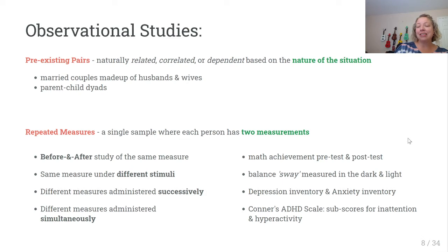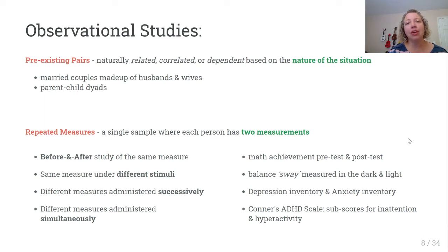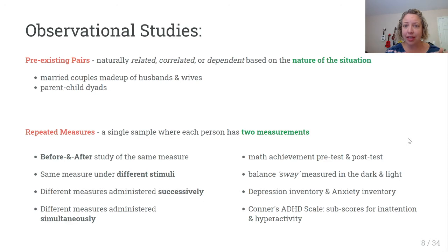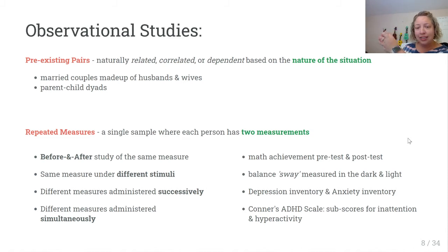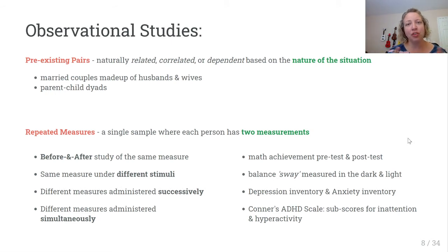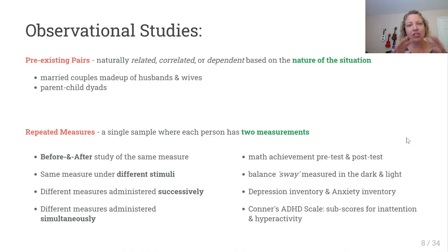For successive administrations, we might give a depression inventory and then an anxiety inventory. Or for simultaneously measured subscores, like the Connors ADHD scale — items are completed at the same time but then scored to produce both an inattention subscore and a hyperactivity subscore from the same questionnaire. All of these are observational situations where we have pairing, or dependence between the pairs of observations made on a single sample.